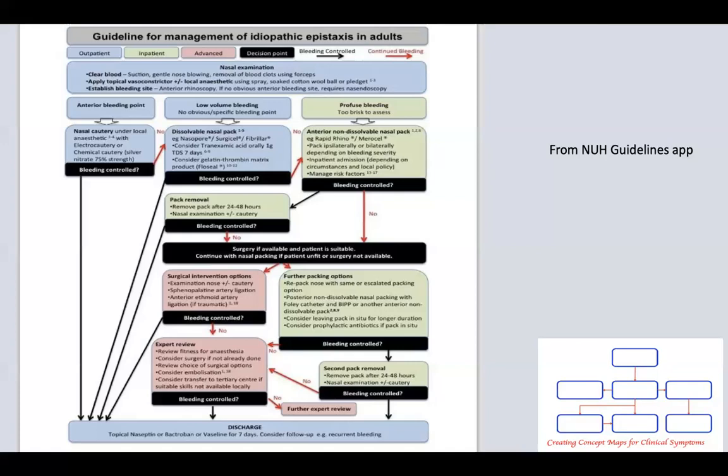Within the outpatient setting, if there is an anterior bleeding point visualised, this can be treated with nasal cautery, either chemical cautery with silver nitrate or electrocautery if this is available. If low-volume bleeding or no specific bleeding points are seen, then bio-resorbable nasal packing material can be applied. In both cases, the patient is discharged with topical antibiotic such as Naseptin or Bactroban cream, or topical Vaseline cream, for a period of one week.